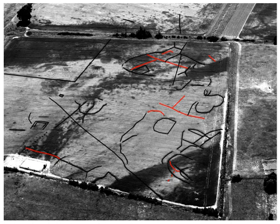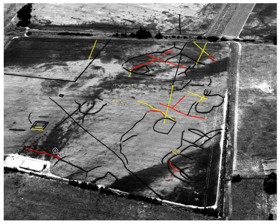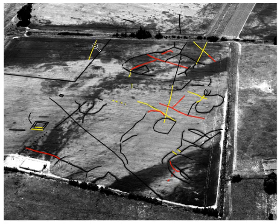And that has been digitised here. So we've got a couple of pit alignments. We can see the closing end of what looks to be a square barrow, and a whole range of other features in that landscape.